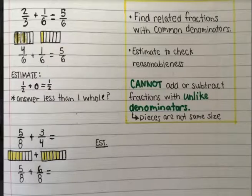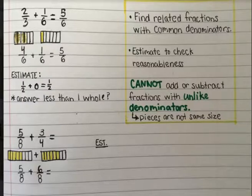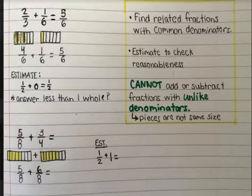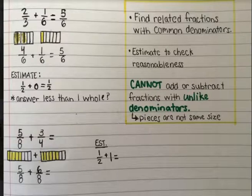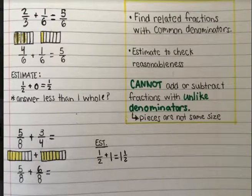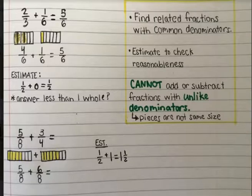Before we find our actual value, we want to estimate to make sure when we do solve, our answer is reasonable. Five eighths is pretty close to a half. And six eighths is closest to one whole — it's kind of right in between a half and a whole, so I'm going to just kind of round up. So first, I know that my answer should be somewhere close to one and a half, but it should also let me know that it's probably going to be closer to one and a half than two wholes.